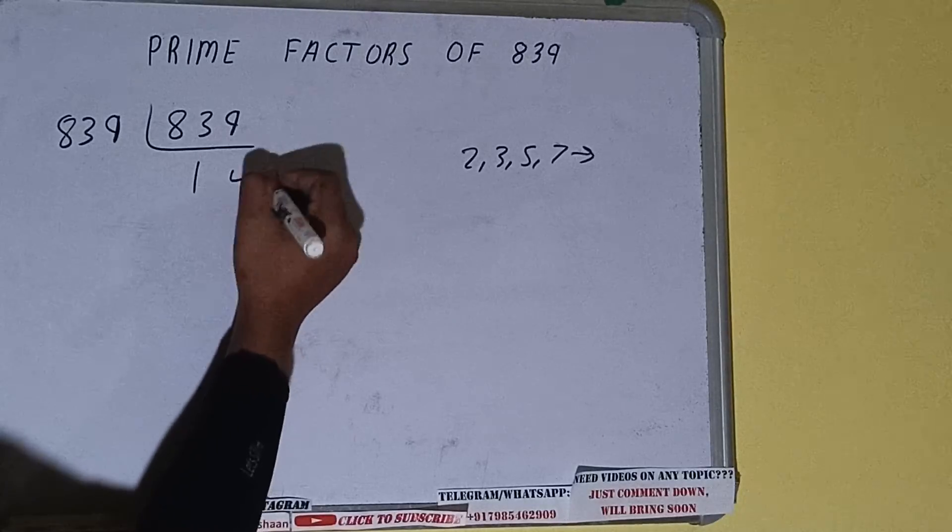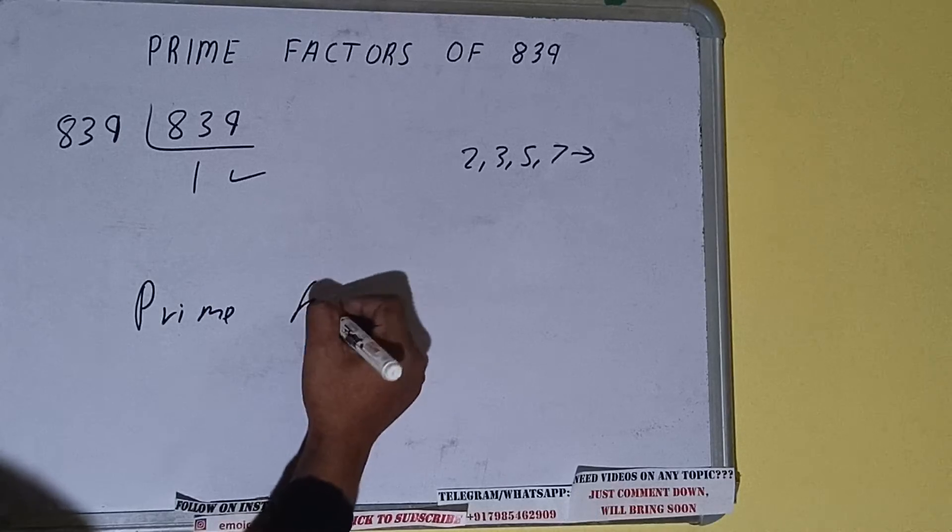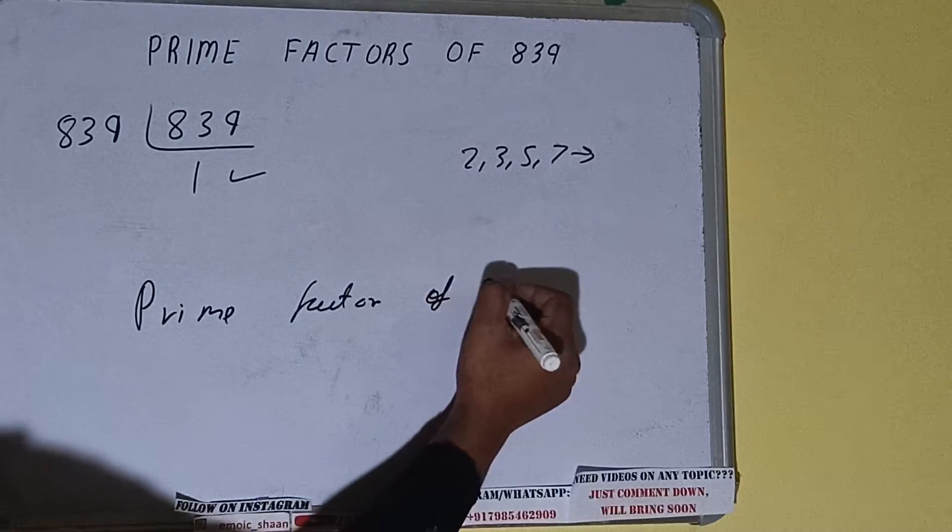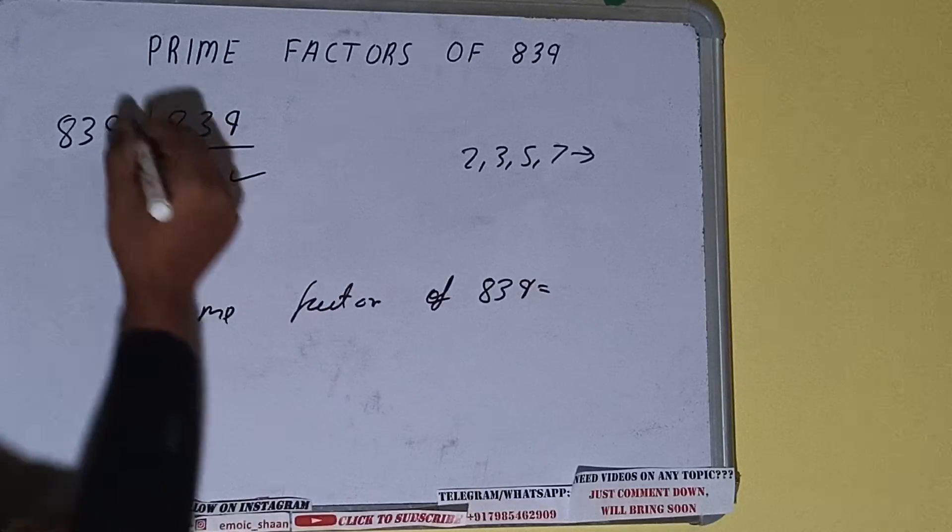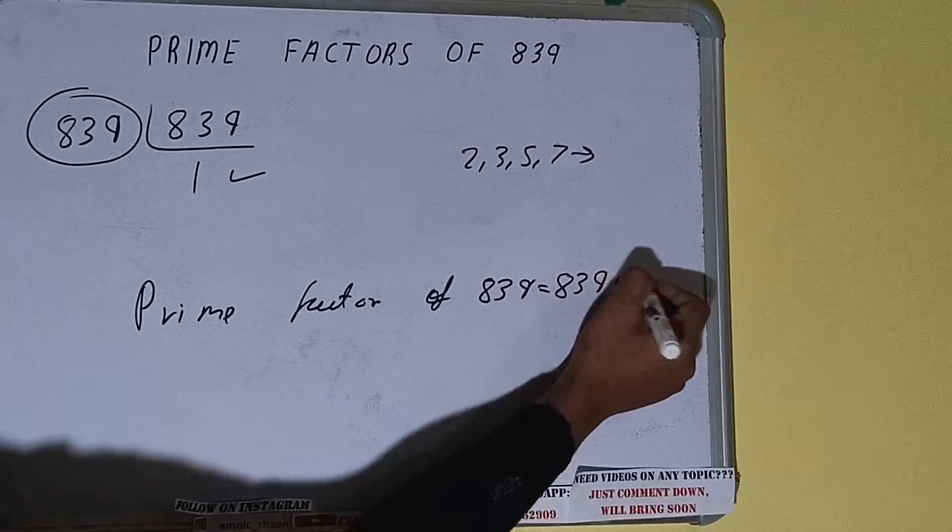Once we get 1, we need to stop and do one last thing. That is, prime factors of 839 equals whatever we have on the left hand side, that is 839. That will be the answer.